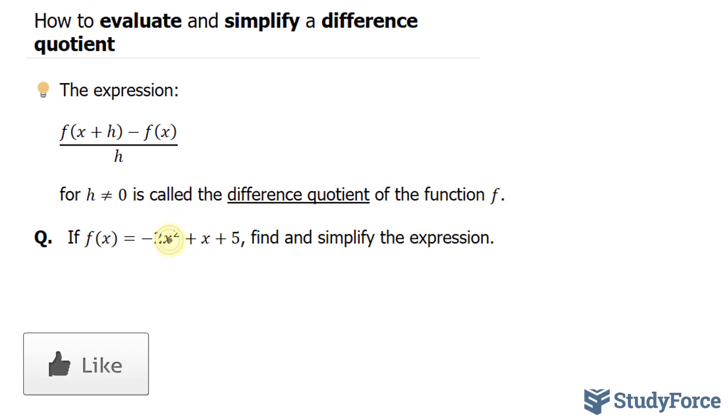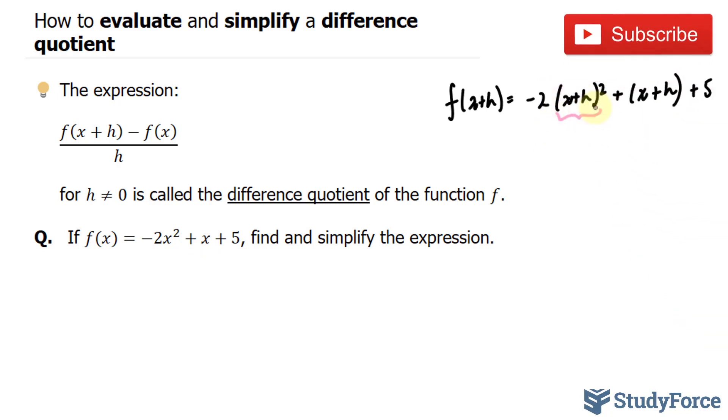I'll start by substituting this x with x plus h. I have f at x plus h is equal to minus 2 times x plus h, raised to the power of 2, plus x plus h plus 5. Notice that this x has been replaced with the input x plus h. Now, I will expand this binomial. I'll do my work right here. x plus h times x plus h, and you can use the FOIL method if you like.